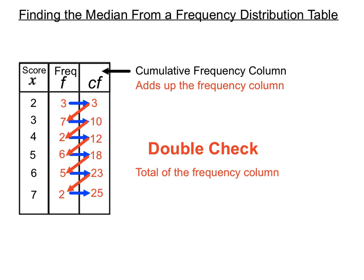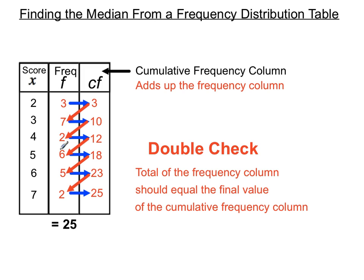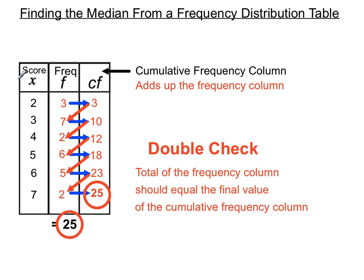We'll double-check our work by comparing the total of the frequency column. The cumulative frequency column is supposed to be adding up the frequency column, so its final value should match the frequency column total. Adding three, seven, two, etc. gives a total of 25 for the frequency column, which matches the final item of 25 in our cumulative frequency column — so we've done the cumulative frequency column correctly.